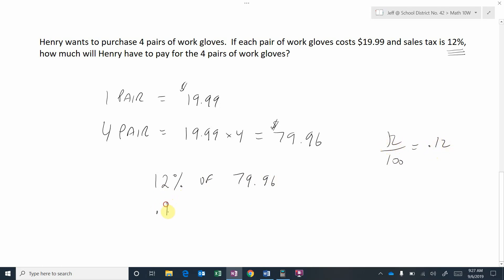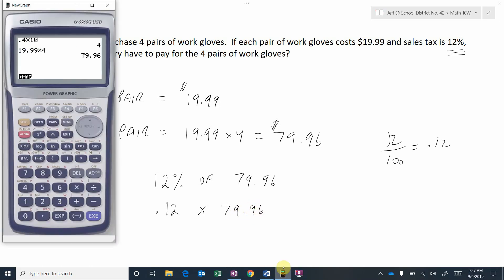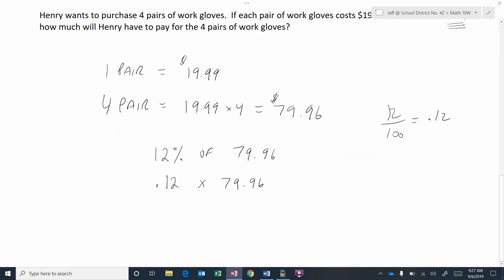And 'of' means times, so 0.12 times 79.96. 0.12 times 79.96 is nine dollars and—let's see, this would be 0.59, but this next digit is a five, so we're going to bump that up to 0.60. So $9.60.